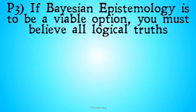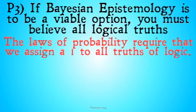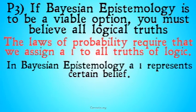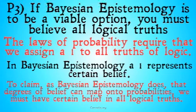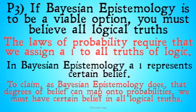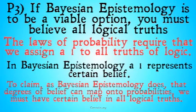With that, let's move on to Premise 3: If Bayesian epistemology is to be a viable option, you must believe all logical truths. The laws of probability require that we assign a 1 to all truths of logic. In Bayesian epistemology, a 1 represents certain belief. To claim, as Bayesian epistemology does, that degrees of belief can map onto probabilities, we must have certain belief in all logical truths. That's just the way Bayesian epistemology has to work. If it doesn't work like that, we can't help ourselves to things like Bayes' theorem, if degrees of belief don't map onto probabilities.